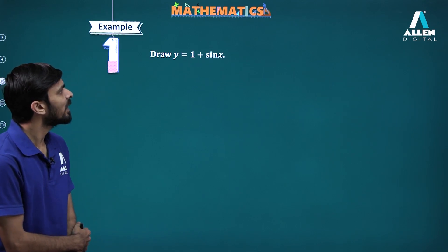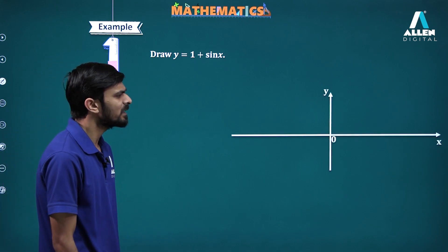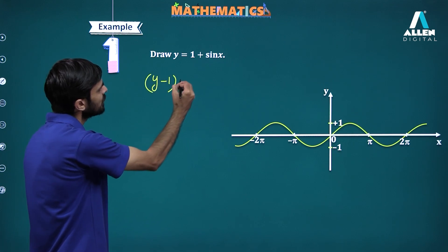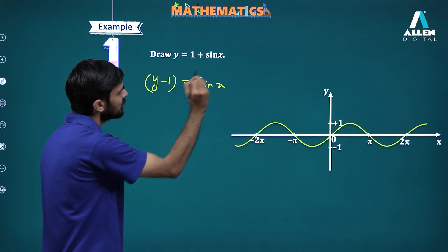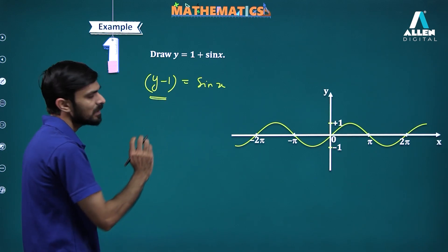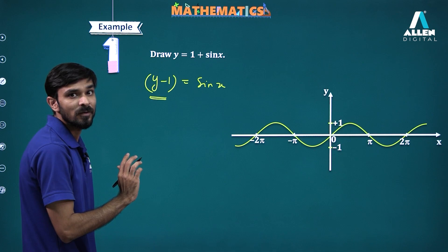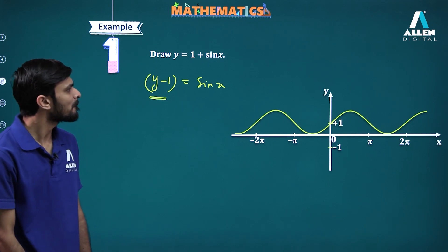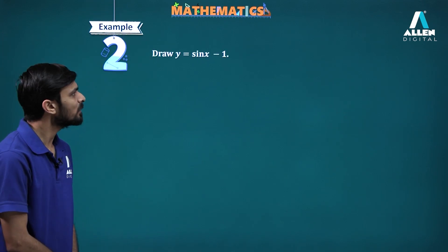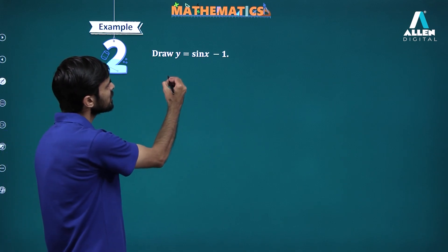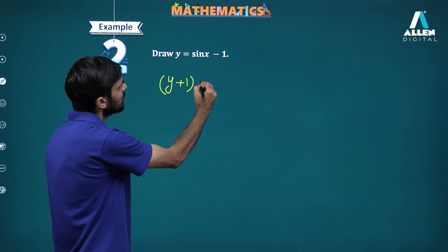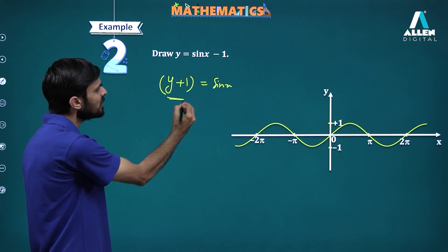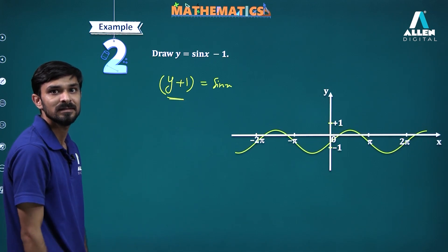Let's see how we can draw the graph of y equal to 1 plus sin x. We do know the graph of y equal to sin x. This is y minus 1 equal to sin x, so all we need to do is shift the graph one unit upwards. For y equal to sin x minus 1, this is y plus 1 equal to sin x — it will be shifted one unit downwards.